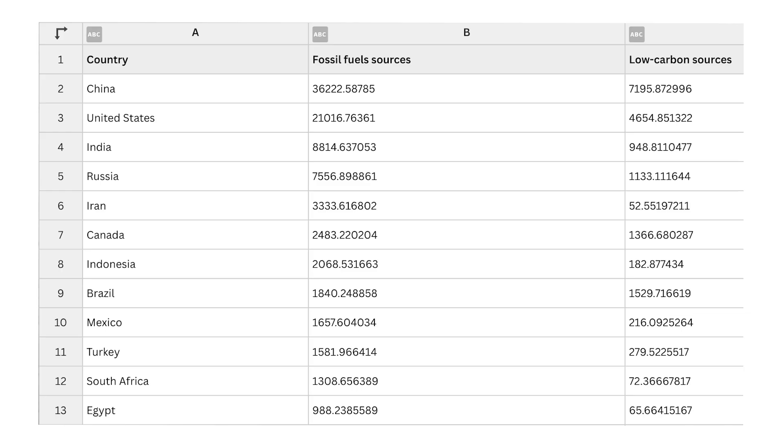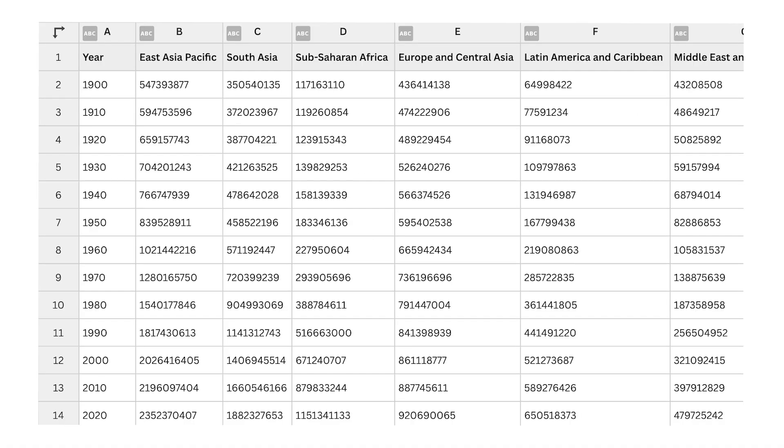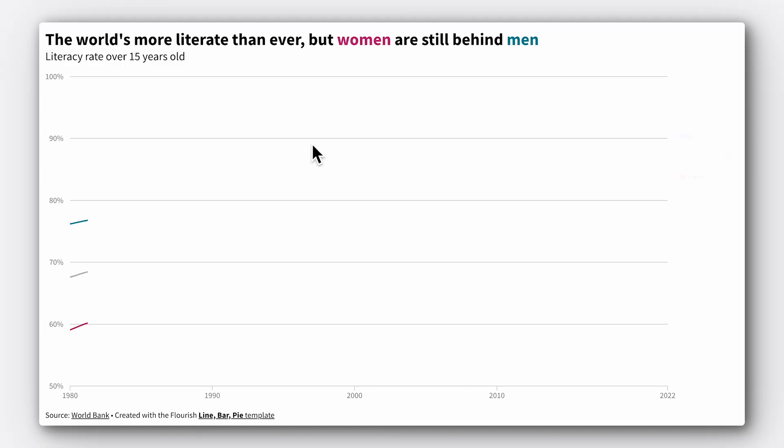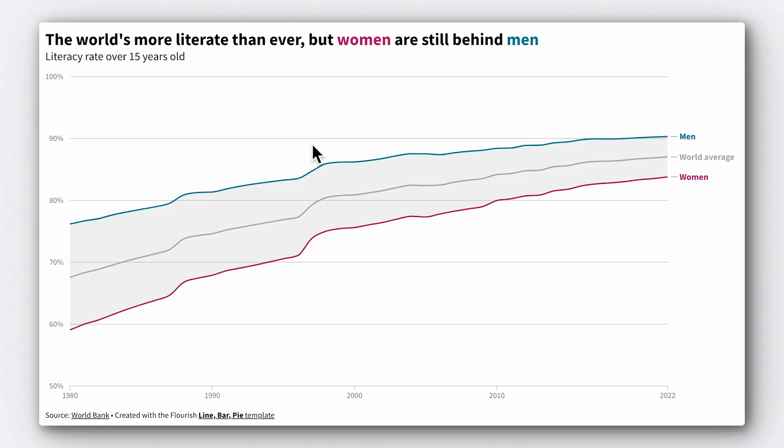First, we need to consider what type of data we have. Is it categorical, numerical, or perhaps time-based? The nature of your data will significantly influence your chart choice. If you're not sure, check out our other video covering data basics. To illustrate trends over time, line charts are your best bet — they're straightforward and effective for tracking changes.